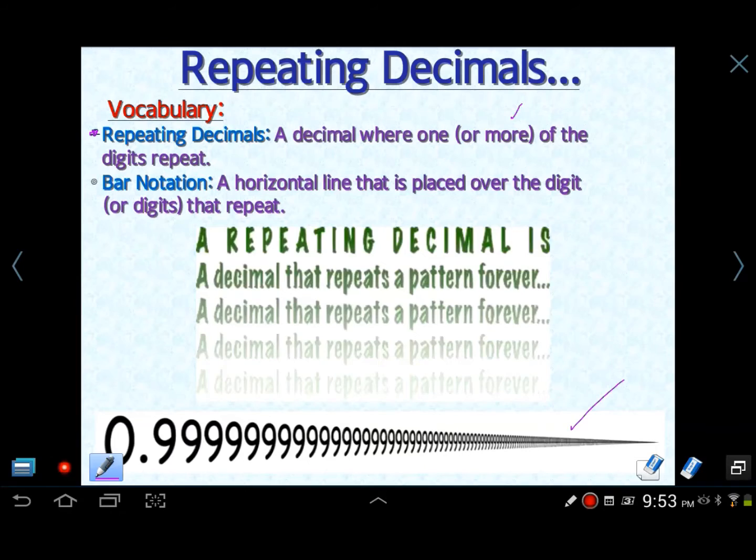Bar notation is a special notation you use when you are expressing or writing, using numbers and symbols, how a repeating decimal should look like. So if you're writing a repeating decimal, for instance 4 tenths repeating, then you're going to have bar notation above the 4. That indicates to me that that is 0.44444 forever.